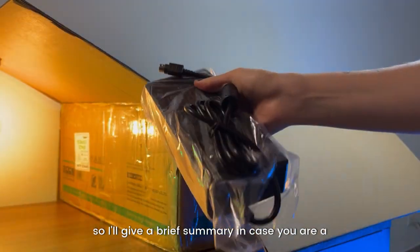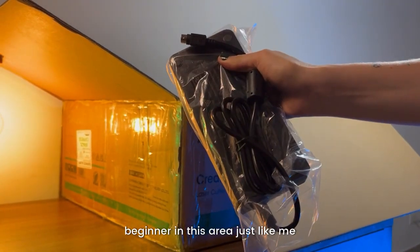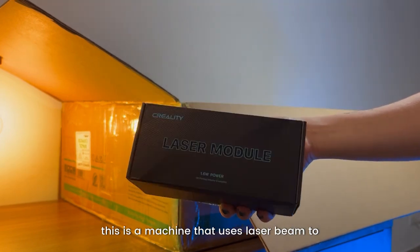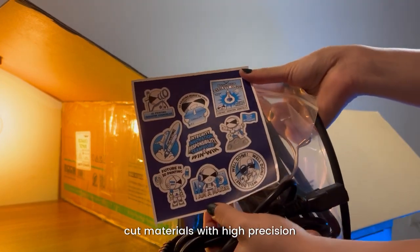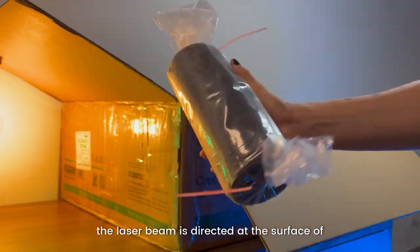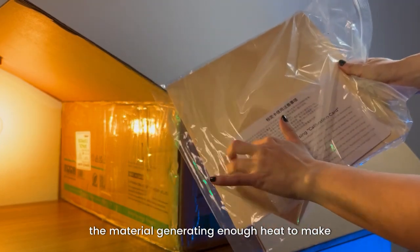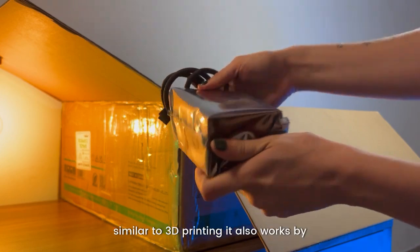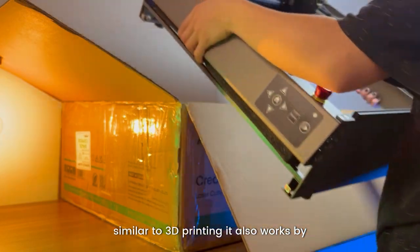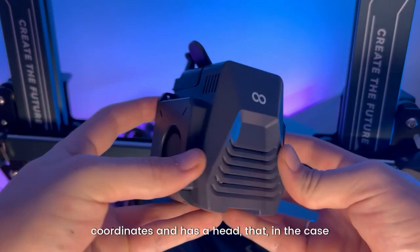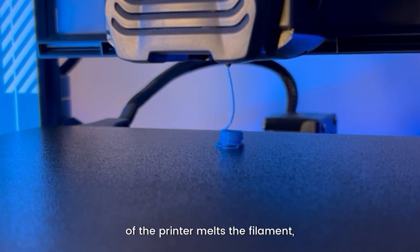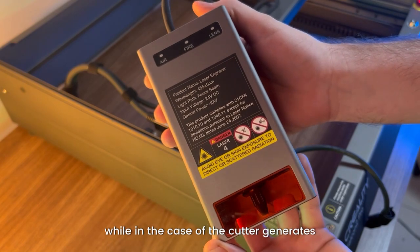I will give a brief summary in case you're a beginner in this area, just like me. This is a machine that uses a laser beam to cut materials with high precision. The laser beam is directed at the surface of the material, generating enough heat to make an engraving or cut. Similar to 3D printing, it also works by coordinates and has a head that, in the case of the printer, melts the filament, while in the case of the cutter, generates the laser.